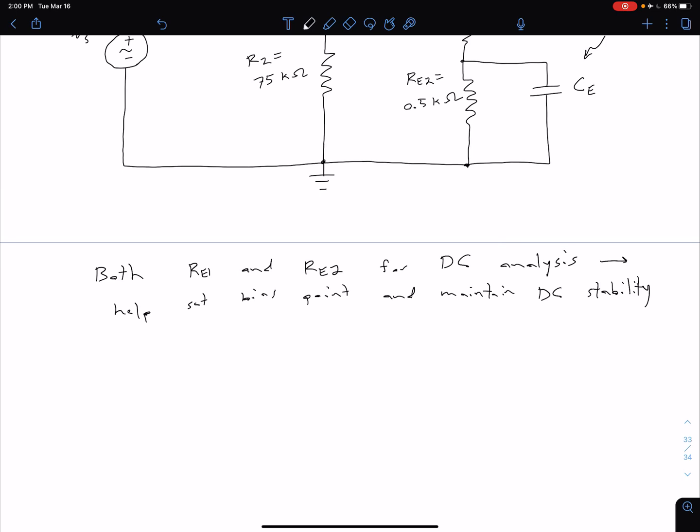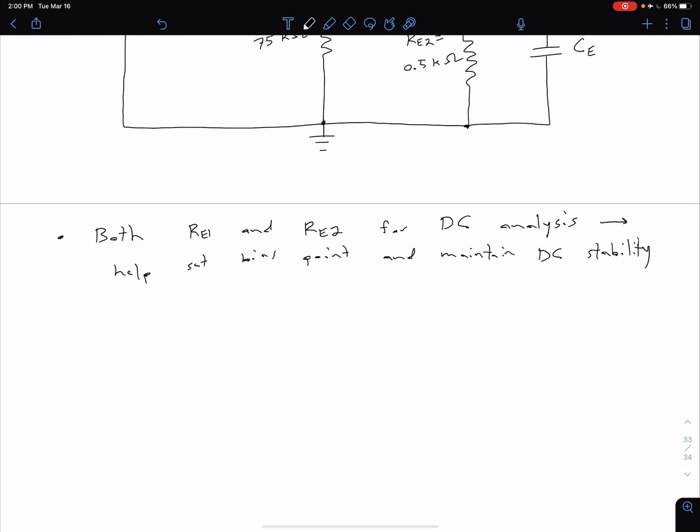We don't want that to be reducing our gain too much. What we do then is because we have that bypass capacitor, only the RE1 is going to be present for our AC analysis. That's going to mean less of a reduction to our gain.